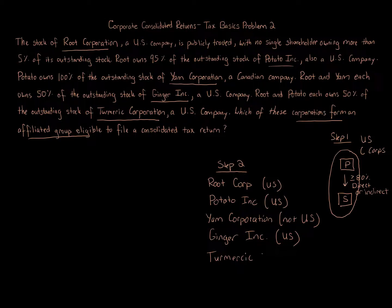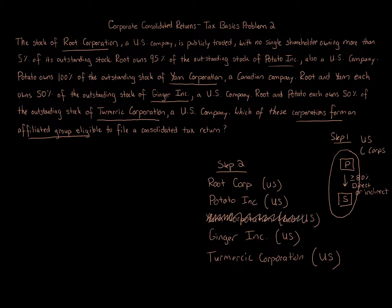So we have all five listed. We know it can't be Yam Corporation because it's not a U.S. corporation — we can eliminate that entity right there. Now we move to step three, which is probably the most difficult but most interesting: draw out the corporate structure now that you know all this information.